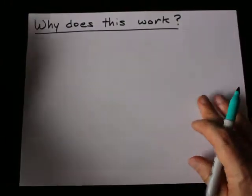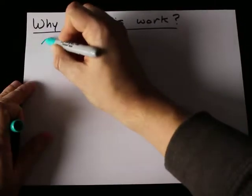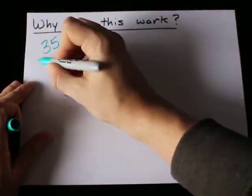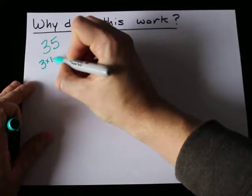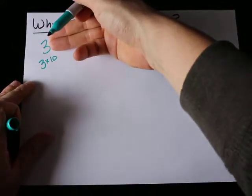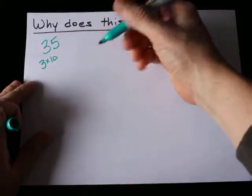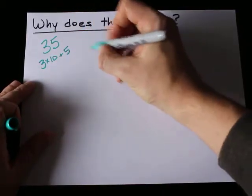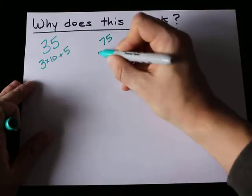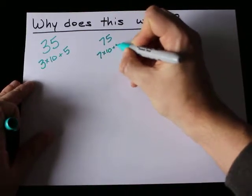Are you curious why this works? If you're not, then you might as well stop here. But any number that ends in 5, like 35, can be written as whatever the number is without the 5 times 10, because that's what moves it to the tens digit, plus the additional 5. That works for 75, which is 7 times 10, plus 5.